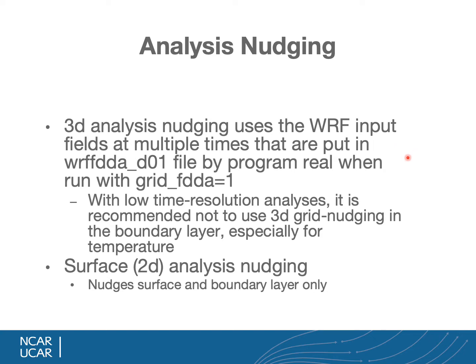3D analysis nudging uses WRF input fields at multiple times placed into the WRF FDDA file by program real when run with grid FDDA equals 1. With low time resolution analysis, it is recommended not to use 3D grid nudging in the boundary layer, especially for temperature — there is a switch to turn it off there, so nudging mainly affects the upper air. Additionally, surface 2D analysis nudging is available, which nudges based on surface analyses at higher time frequency and only nudges within the boundary layer.